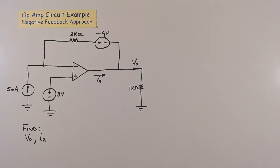Here is an op-amp circuit with resistors, two voltage sources, and a current source.